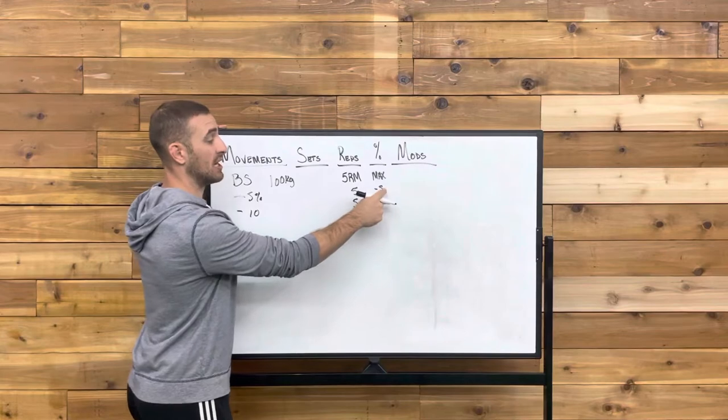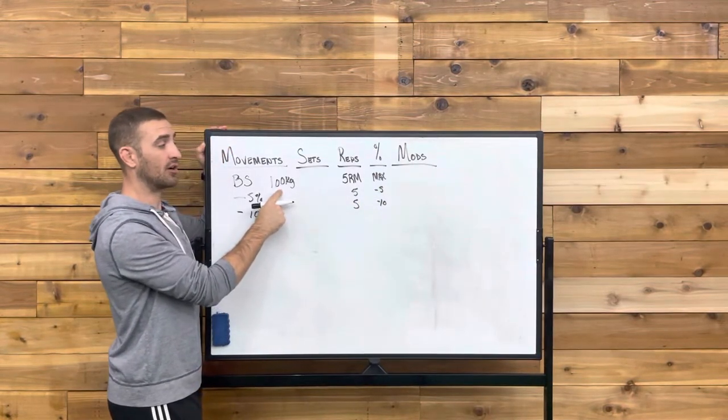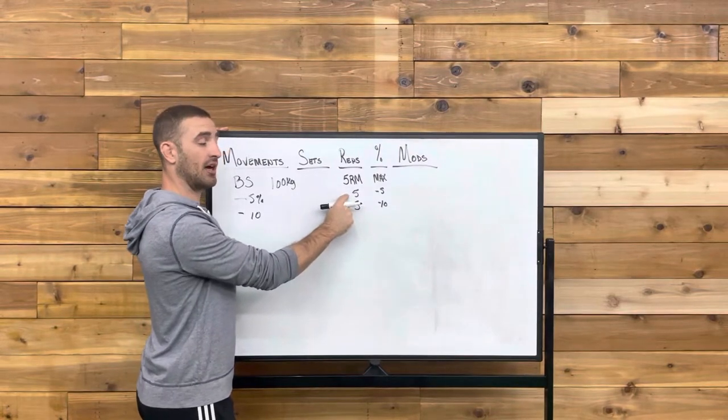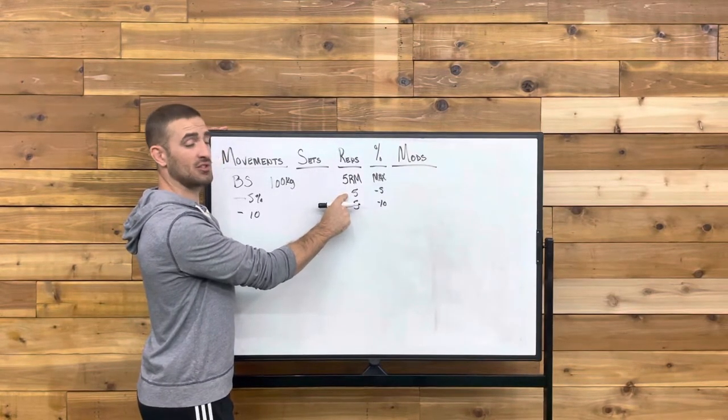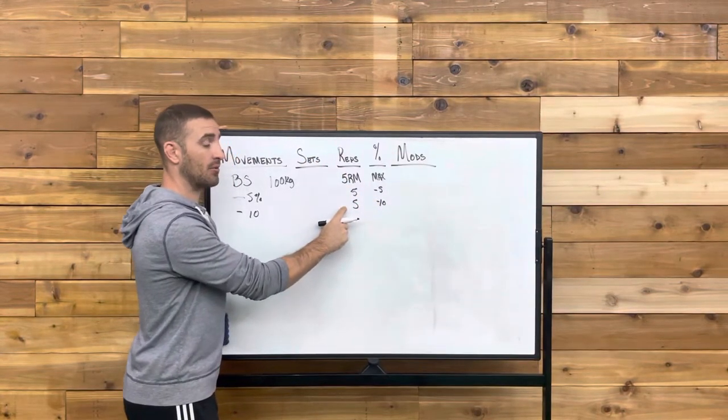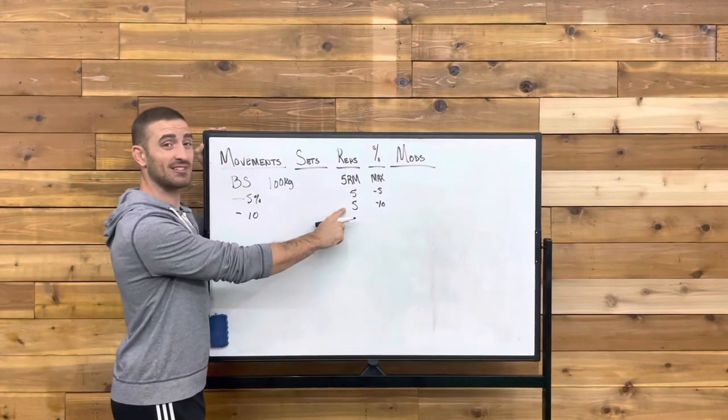So in our case, we'd say 5% of 100 kilograms is five kilos. So we would do our first back offset at 95. And then we would just subtract another five kilos to get that 10%, and we would do 90 kilograms, this is our second back offset.